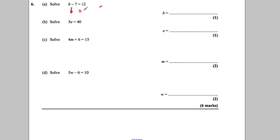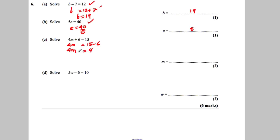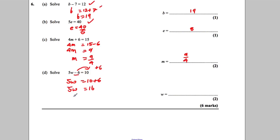Add 7 to both sides. B would be 12 add 7. B would be 19. Check: 19 takeaway 7 is 12. Next: divide both sides by 5. E would be 40 divided by 5. 40 divided by 5 is 8. Check: 5 times 8 is 40. Two steps here: subtract 6 off both sides. 4M would be 15 takeaway 6. 4M would therefore be 9. Divide both sides by 4. M is 9 over 4 — absolutely fine to leave your answer as 9 over 4. Next: we've got a negative 6, so add 6 to both sides. 5W would be 10 add 6. 5W would be 16. Divide both sides by 5. W is 16 over 5. Fine to leave your answer like that.